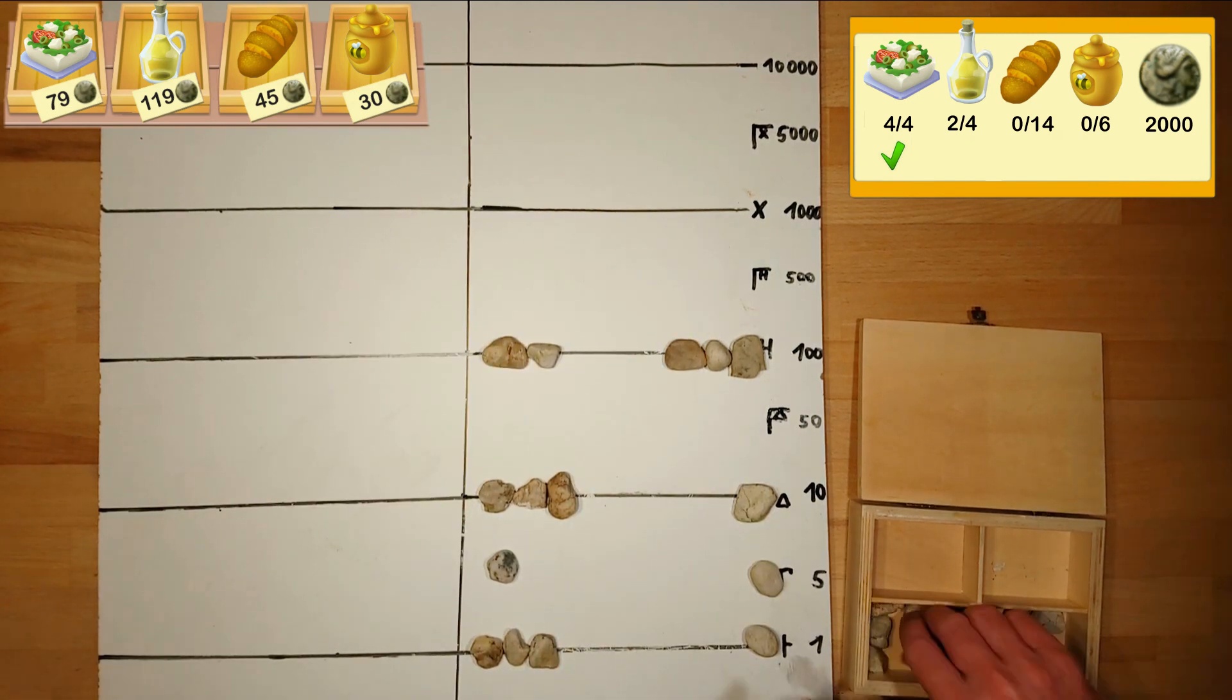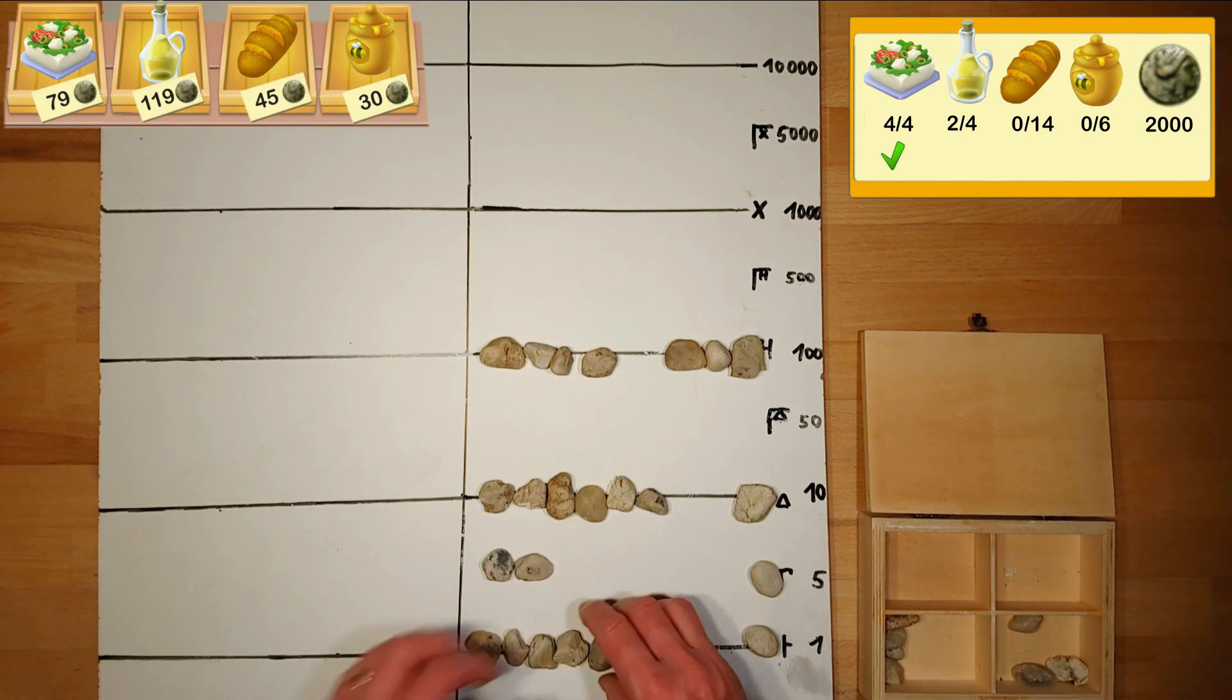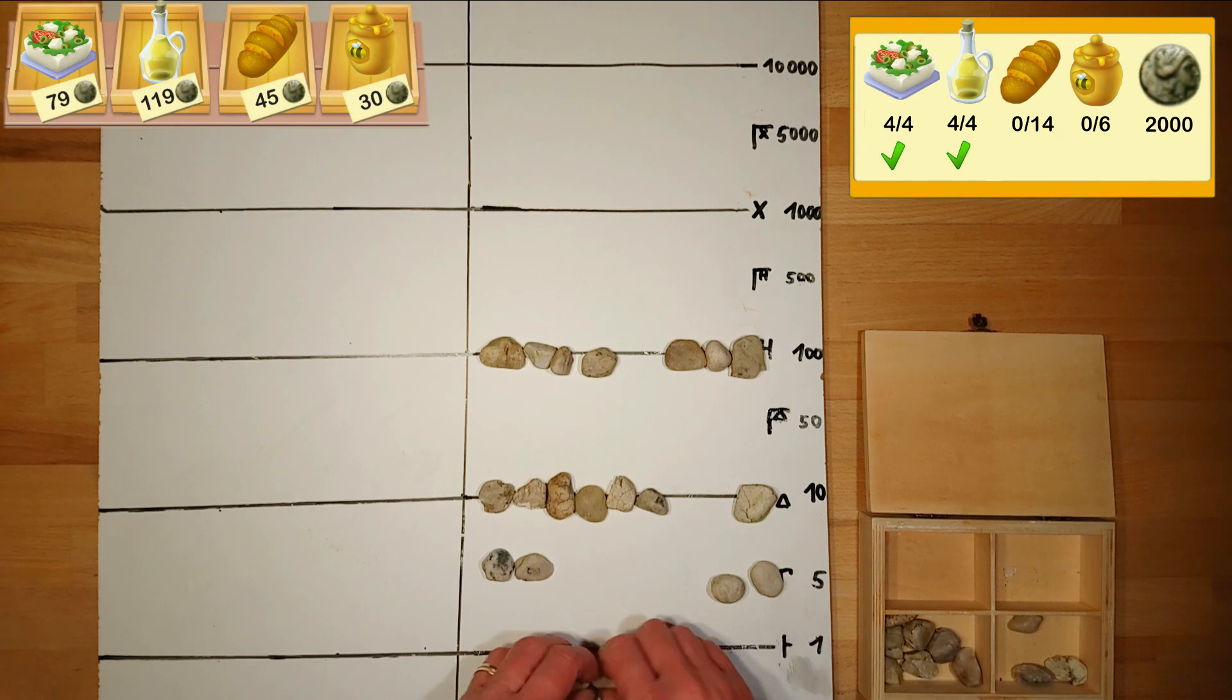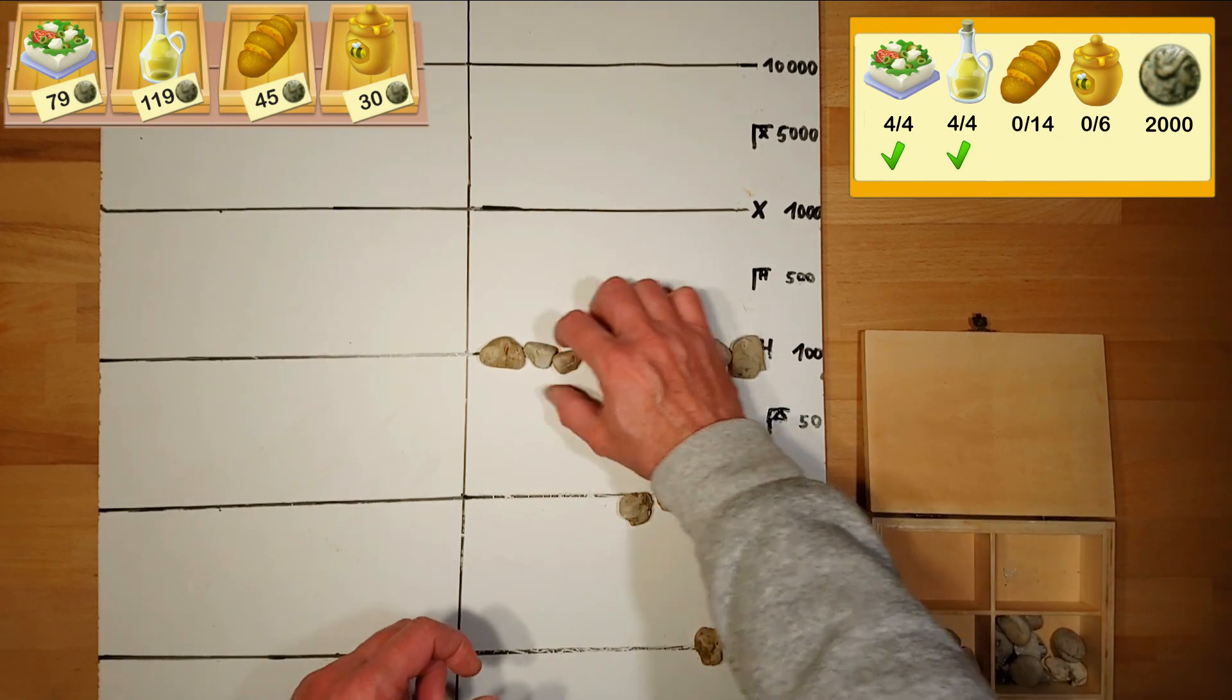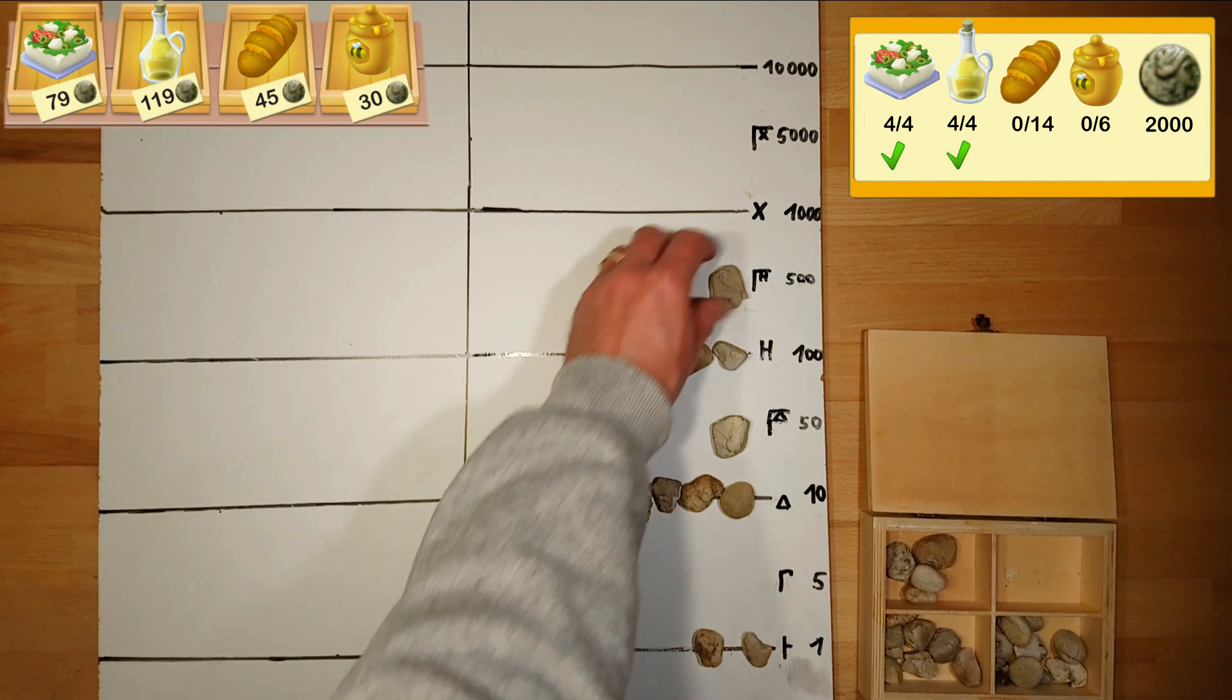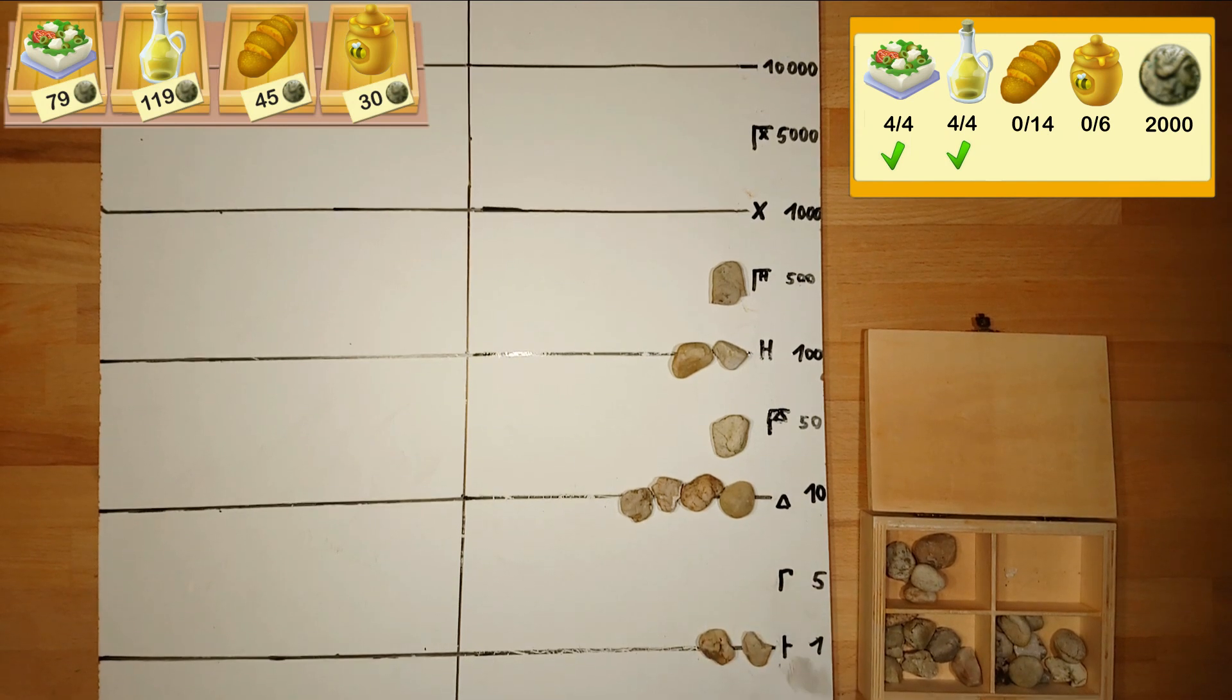We want twice as much olive oil. Therefore we multiply the pebbles for the olive oil by two. Now we have to sum up the price for the olive oil with the price for the feta cheese. We now have calculated the combined price for feta cheese and four olive oil. It's 792 coins.